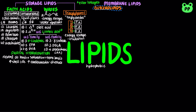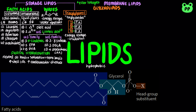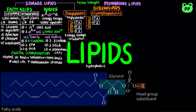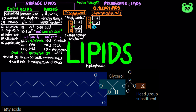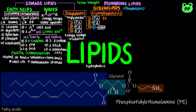Triacylglycerol is a type of glycerol lipid that mainly functions as energy storage and insulation. Membrane glycerol lipids typically have two fatty acids attached to the first and second carbons of glycerol through ester linkages, and a highly polar or charged group attached to the third carbon through a phosphate group. These membrane glycerol lipids are known as glycerophospholipids or phosphoglycerides. One example is phosphatidylethanolamine (PE), with positively charged ethanolamine as the head group. Since the phosphate group has a -1 charge, the net charge of PE is zero under physiological conditions.